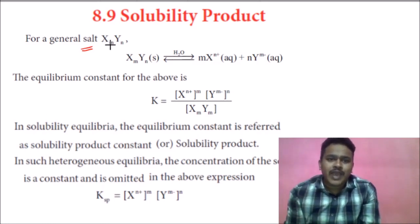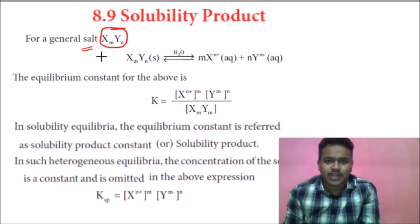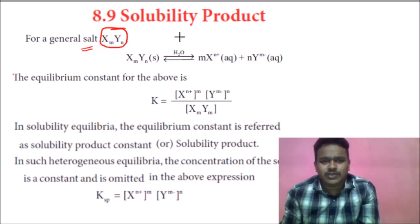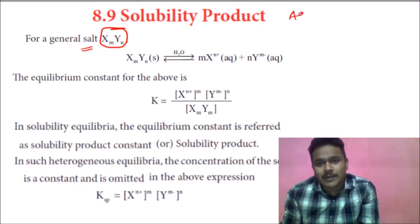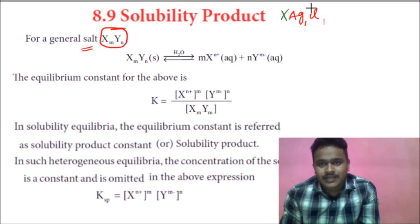Now we are talking about a general salt in the format XmYn. Don't confuse this with anything — this is a general formula of the salt we are using in this concept. For example, I will take the salt AgCl: here Ag is like X, and Cl is like Y.